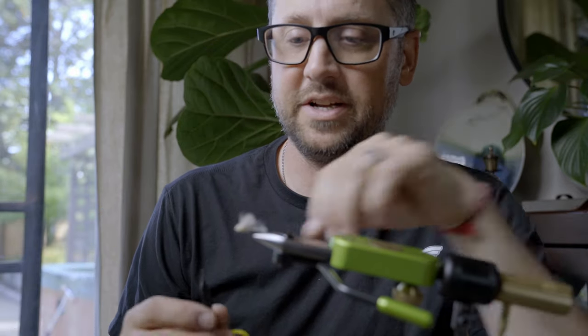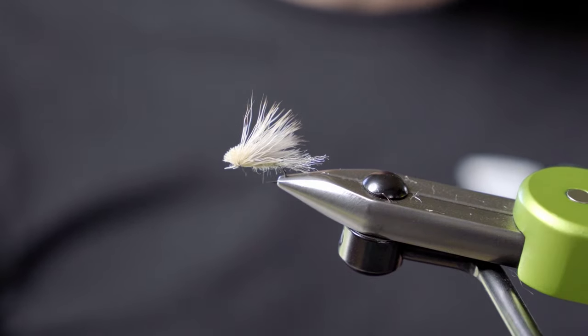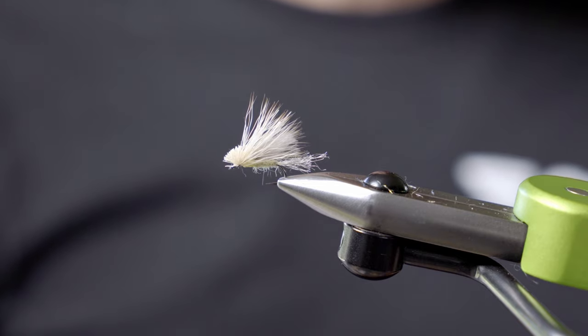So what I've done is create a caddis pattern that'll fish as an emerger, a cripple, an egg layer, all sorts of those stages where that caddis is going to be low on the water and trout are going to key on maybe an opportunistic meal.